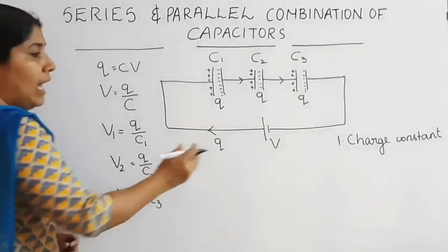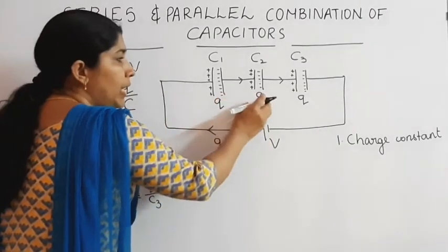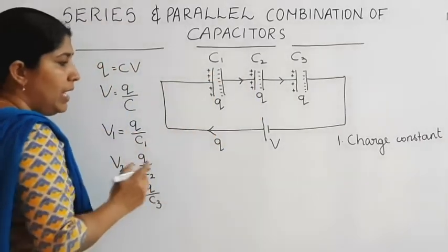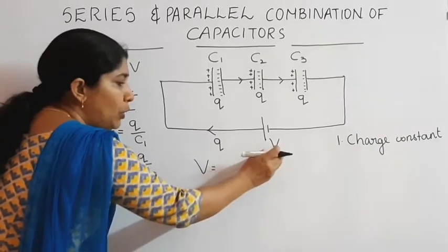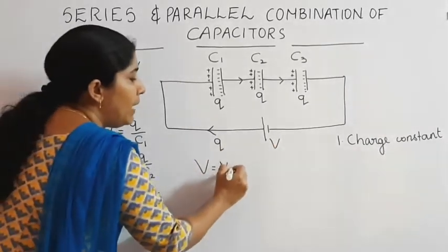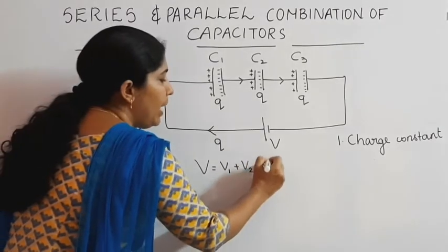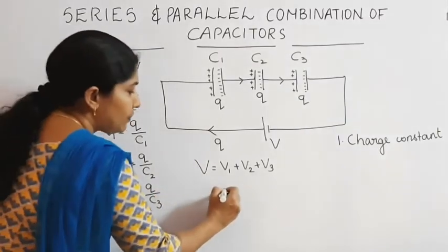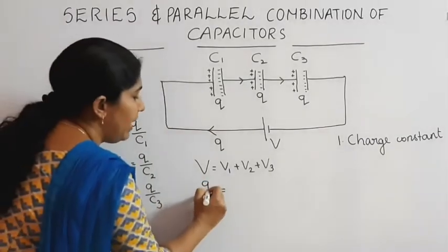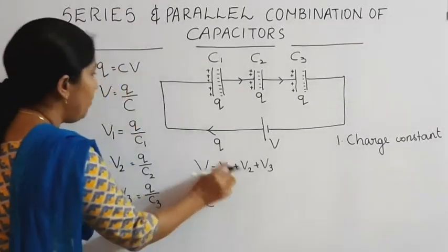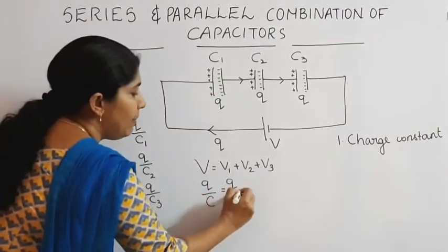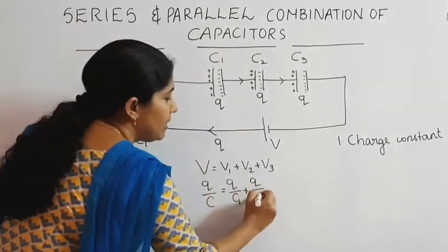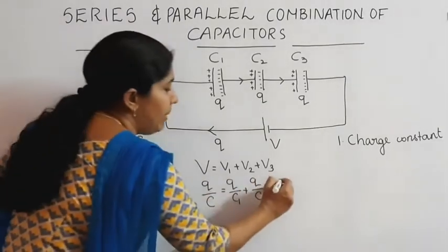The applied potential is divided into three and appears across capacitors C1, C2 and C3. Therefore, the total potential V is equal to V1 plus V2 plus V3. Substituting these values: V is equal to Q divided by C1 plus Q divided by C2 plus Q divided by C3.